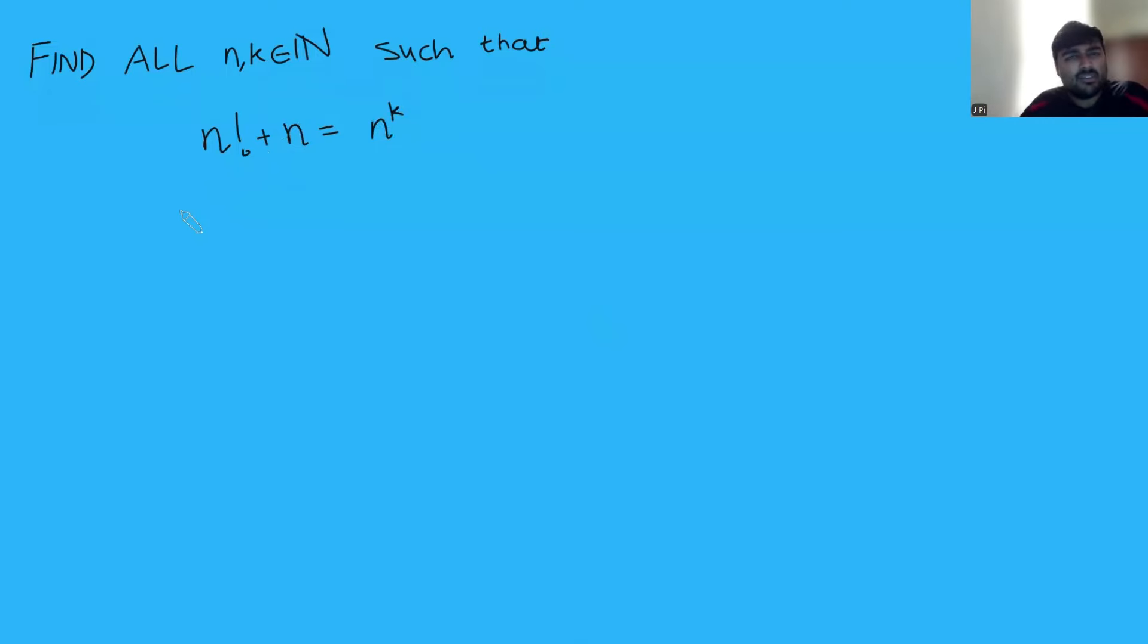So k is at least 2, and we can just say k equals r plus 1. And since k is at least 2, that means r is at least 1, and so must be a positive integer. So this equation becomes n factorial plus n equals n to the r plus 1. Now all I'm going to do is divide by n everywhere, so this becomes n minus 1 factorial plus 1 equals n to the r.